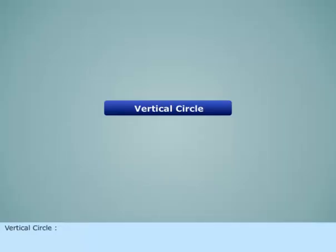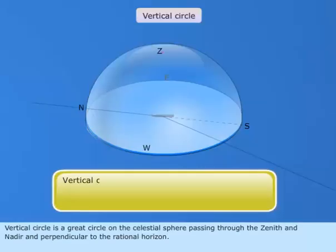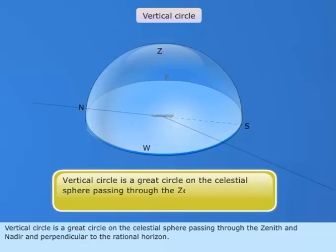Vertical Circle is a great circle on the celestial sphere passing through the zenith and nadir and perpendicular to the rational horizon.